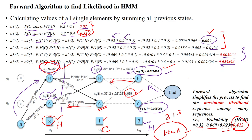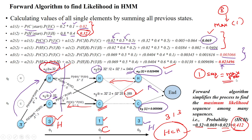In the normal method, we calculated eight possibilities and then identified the maximum probability value among all state sequences. But here, using the forward algorithm, we calculated only one sequence that has the maximum probability value. We are reducing the time by using the forward algorithm to find the likelihood state sequence in the hidden Markov model. Thanks for watching.